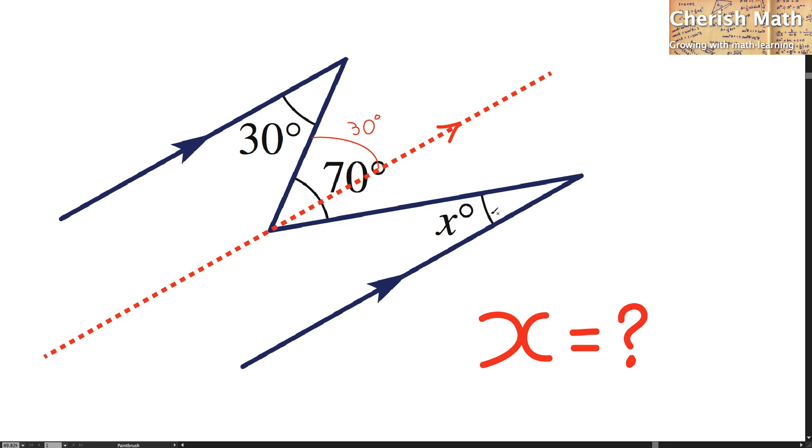I need to find what is the remaining angle for this part, which is by using 70 degrees minus the 30 degrees, and I got it as 40 degrees.